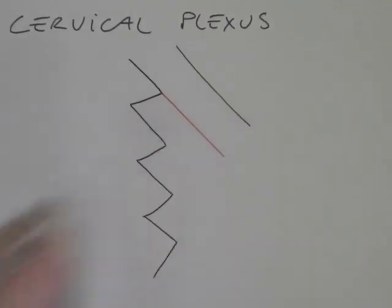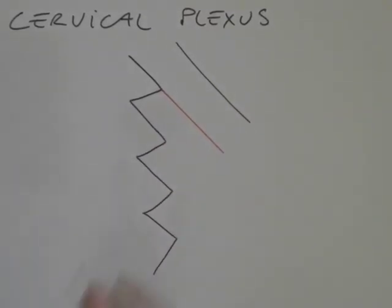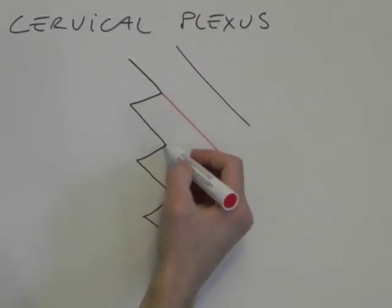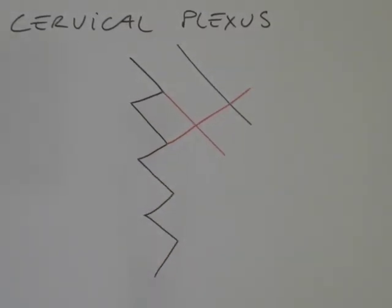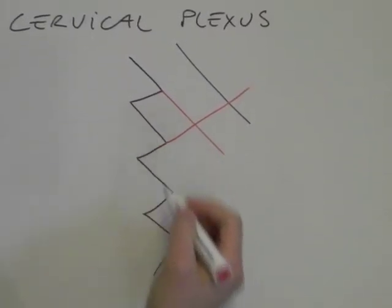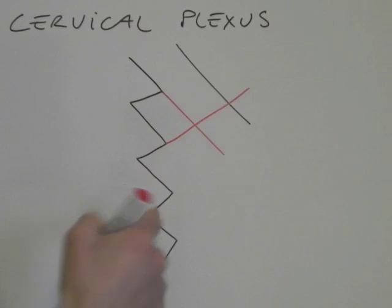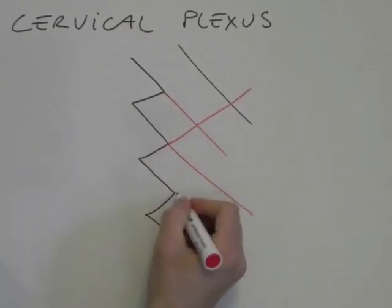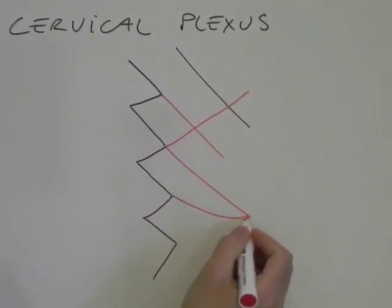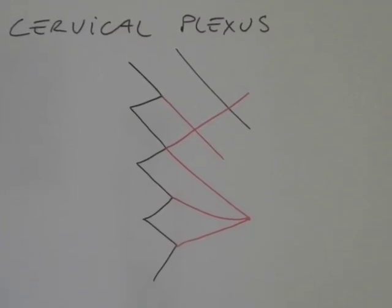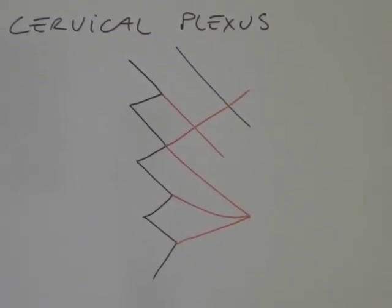We will see why the color in one second. Then we cross these two lines with one line upwards, and now we connect the last three loops into one single nerve coming out from the plexus. This is basically the base of our cervical plexus.